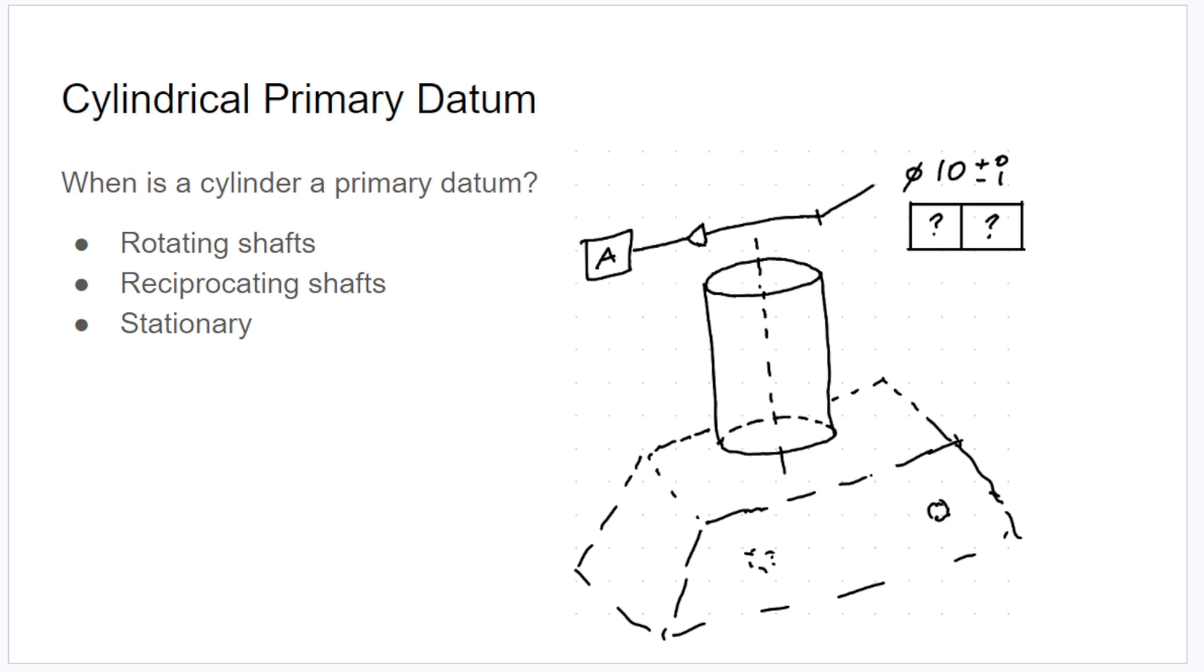So you'll see cylinders as primary datums all over the place. I don't think it's the most common, but rotating equipment will have lots of cylindrical primary datums. Reciprocating equipment will have lots of cylindrical primary datums. And then if you're working with interference fits, a lot of the time you'll see a cylinder as a primary datum as well.